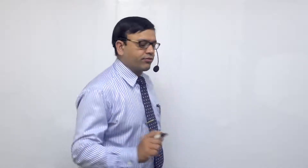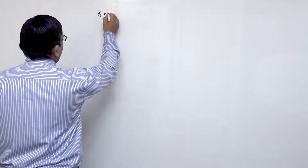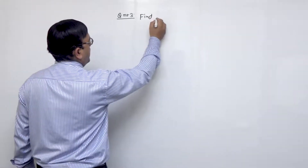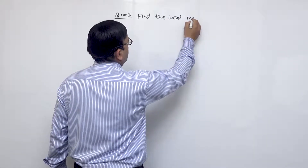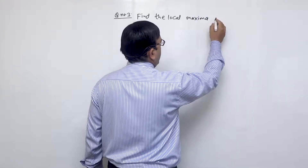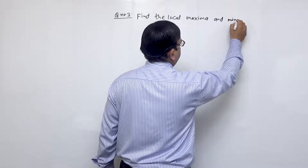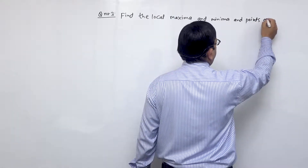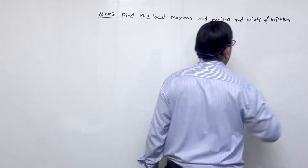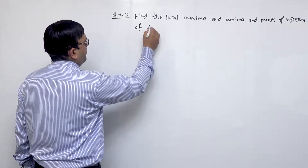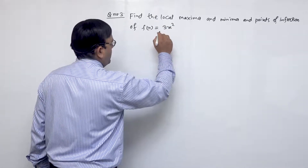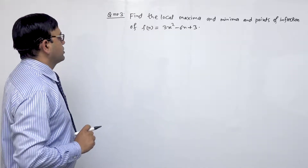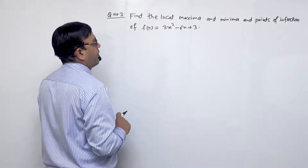Students, now we are going to start question number 3. Our question is: find the local maxima and minima and points of inflection of f(x) = 3x² - 6x + 3.